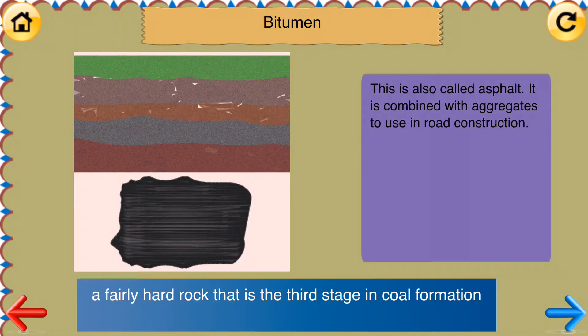Bitumen. A fairly hard rock that is the third stage in coal formation. This is also called asphalt. It is combined with aggregates to use in road construction.